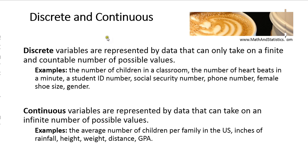The next two categories are discrete and continuous. Discrete variables are represented by data that take on either a finite or countable number of values, meaning between any two values in your data set there is not an infinite number of possible values. For example, the number of children in a classroom is discrete — you can have six or seven children, but you cannot have 6.43 children. So the number of children in a classroom is considered discrete. The number of heartbeats per minute and student ID numbers are also discrete — between any two ID numbers there is not an infinite number of other possible ID numbers.